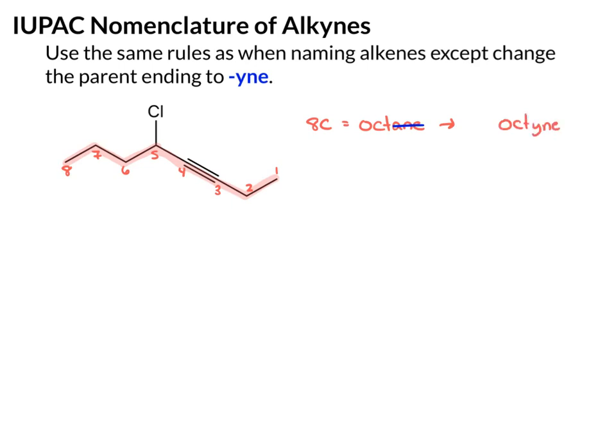But we also want to specify where that alkyne begins. So we'll put a three in front of the parent name because the alkyne is between carbons three and four. So you can make the parent name 3-octyne, or you can write it as oct-3-yne. Either would be correct.